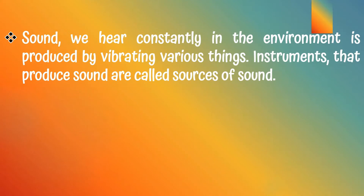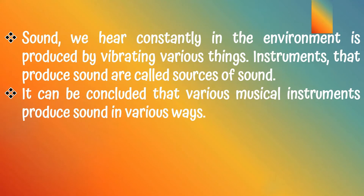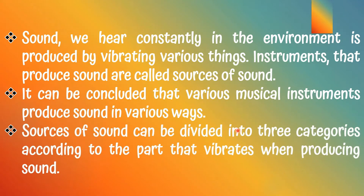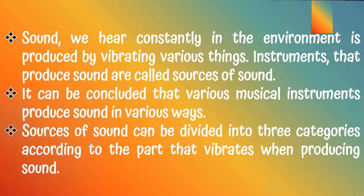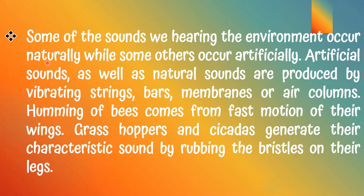Sound we hear constantly in the environment is produced by vibrating various things. Instruments that produce sound are called sources of sound. Sources of sound can be divided into three categories according to the part that vibrates when producing sound. Some sounds occur naturally while others occur artificially. Both artificial and natural sounds are produced by vibrating screens, bars, membranes, or air columns.